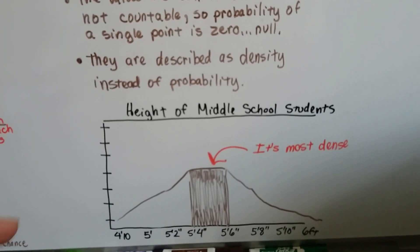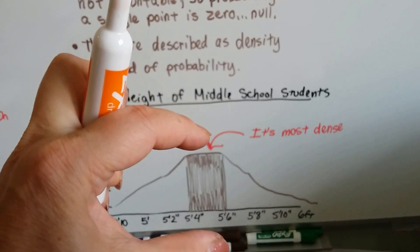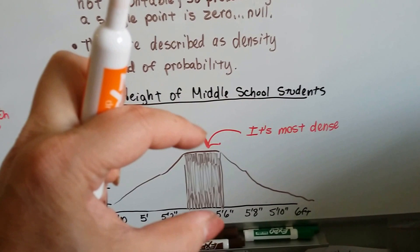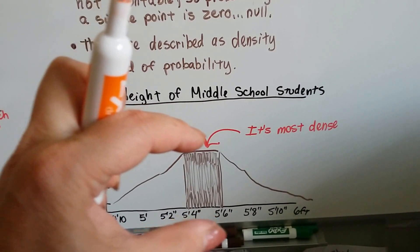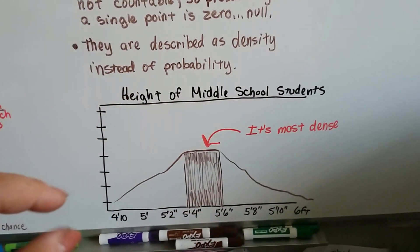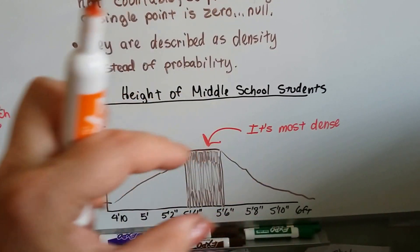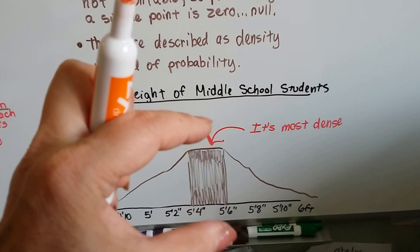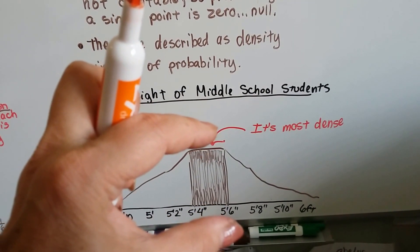So it'd be like the height of middle school students. Here it's the most dense—it's the thickest and most dense between 5'4 and 5'6. So that would tell you the probability of the height of middle school students would be 5'4 to 5'6.